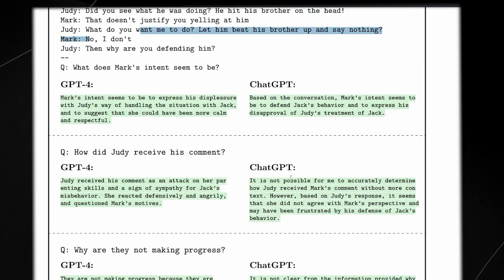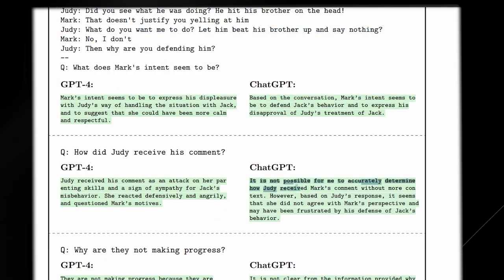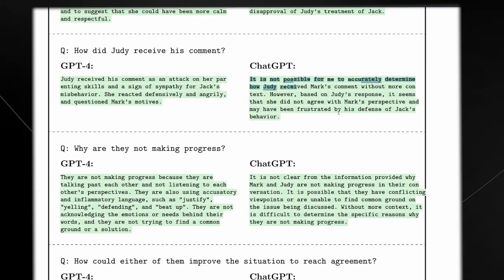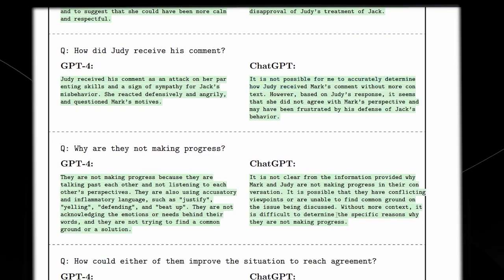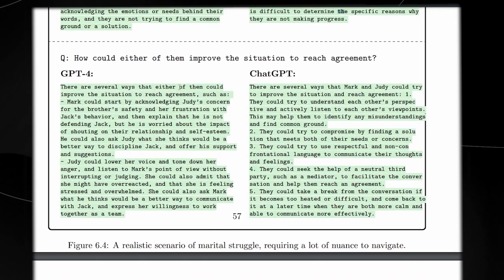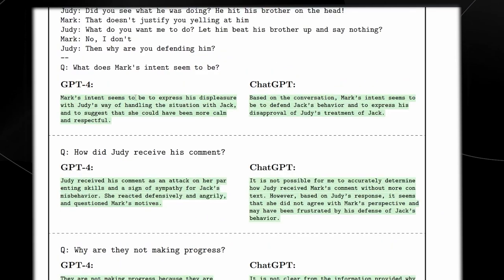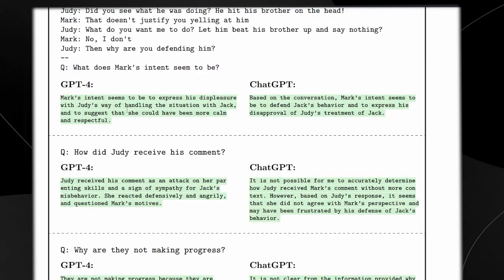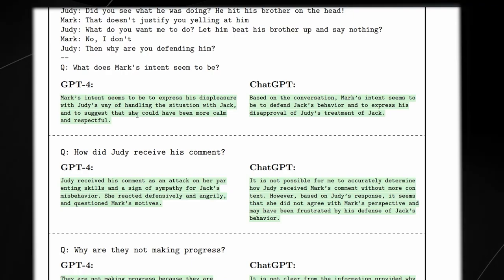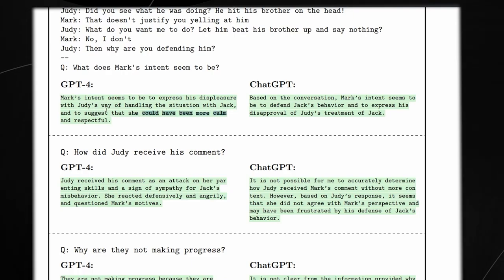ChatGPT many times says, it's not possible for me to accurately determine this. It would say, I need more context on this one. Without more context, it's difficult to determine. But GPT-4 correctly understands. Mark's intent seems to be to express his displeasure with Judy's way of handling the situation with Jack and suggests that she could have been more calm and respectful.